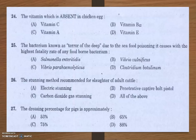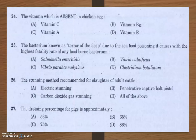Vibrio vulnificus is known as the 'terror of the deep' because it has the highest fatality rate due to seafood poisoning compared to any other foodborne bacteria. This bacteria is most prominent in summer when water is warm, as warm water is a favorable condition for Vibrio vulnificus.